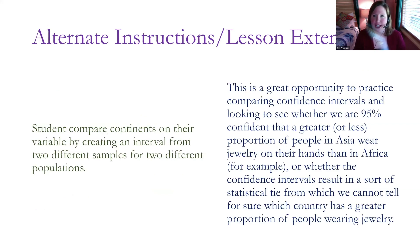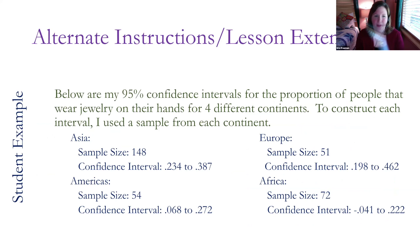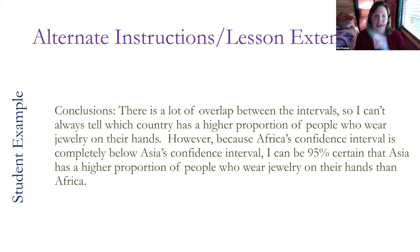The second alternative instruction was that students could compare continents on their variable and practice looking at whether or not their intervals overlap. For example, this student went ahead and looked at jewelry on hands for five continents — they combined the Americas — and they created these confidence intervals, then looked at the degree of overlap between the confidence intervals and came up with an interpretation. They said there's a lot of overlap between the intervals, so they can't always tell which country has a higher proportion, but because Africa's confidence interval is completely below Asia's, they feel 95% certain that Asia has a higher proportion of people who wear jewelry on their hands than Africa. It's just an opportunity to extend the lesson or focus on slightly different topics depending on your individual class.